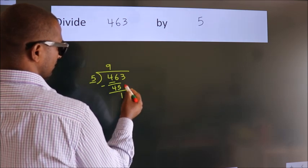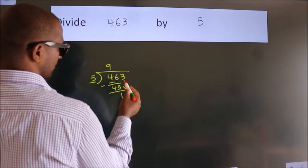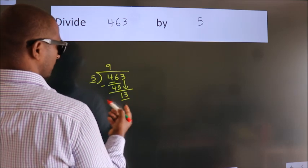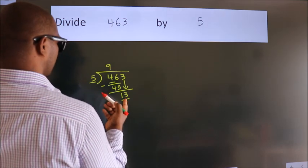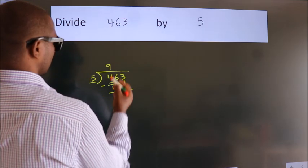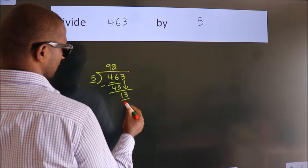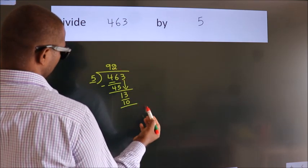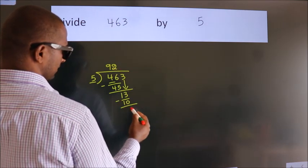After this, bring down the beside number. So 3 down, making 13. A number close to 13 in the 5 table is 5 twos, 10. Now we subtract and get 3.